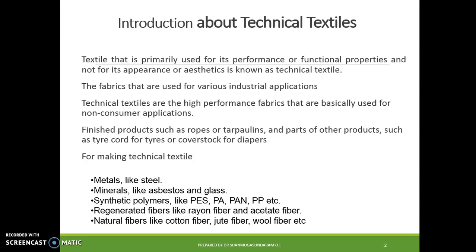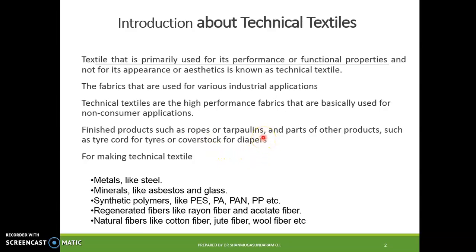The fabrics are used for various industrial applications. Technical textiles are high performance fabrics that are basically used for non-consumable applications. Finished products such as ropes or tarpaulins, or parts of other products such as tire cord, all come under technical textiles. Even baby diapers come under technical textiles.